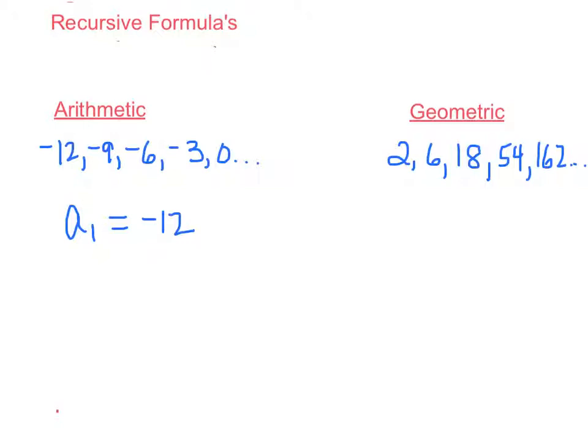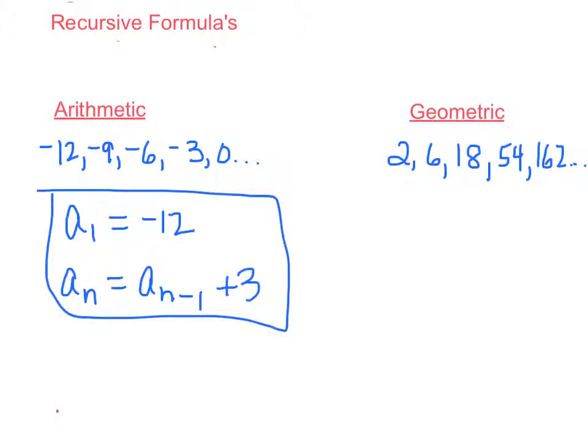Then the second part would be a sub n equals a sub n minus 1. Now notice it says plus d. So you just look at your series and you ask, what am I adding by every single time? And you should see that you're adding by 3. And this is your recursive formula. It really is that simple.